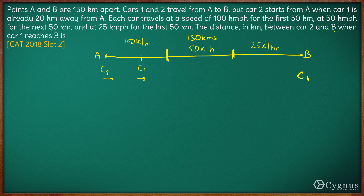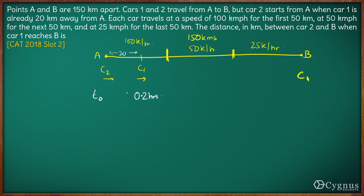The question is: what is the distance in kilometers between Car 2 and B when Car 1 reaches B? Let us say T0 is when Car 1 starts. Time taken for Car 1 to travel 20 kilometers will be 20 divided by 100, that is 0.2 hours. Car 1 reaches the 50 kilometer mark in 0.5 hours.